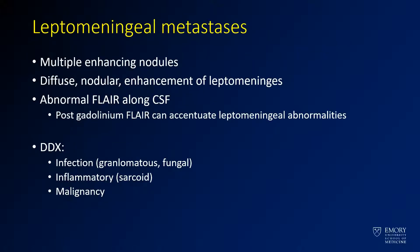For this case we have metastasis with leptomeningeal disease. This patient has a number of enhancing nodules in the brain and there is diffuse nodular enhancement of the leptomeninges. You can also see abnormal FLAIR signal along the CSF. When you have leptomeningeal enhancement, you want to think about infection, inflammatory conditions like sarcoidosis, and malignancy.